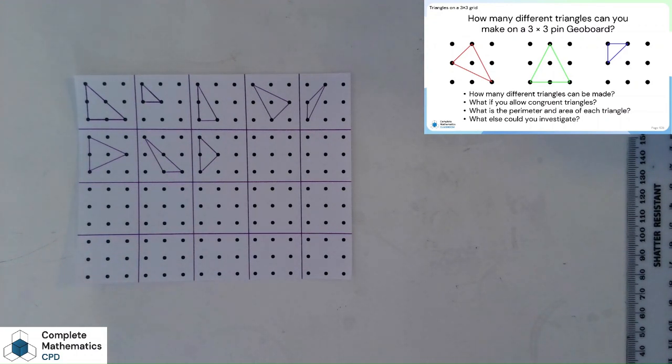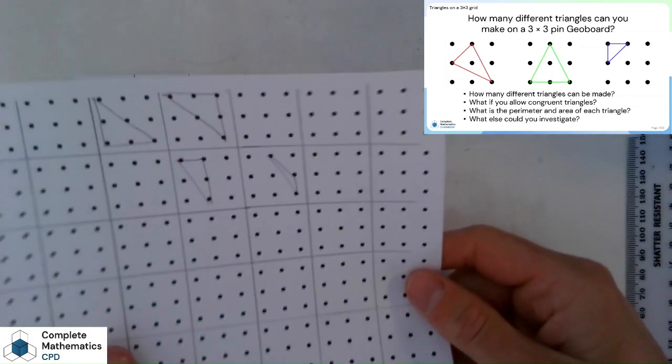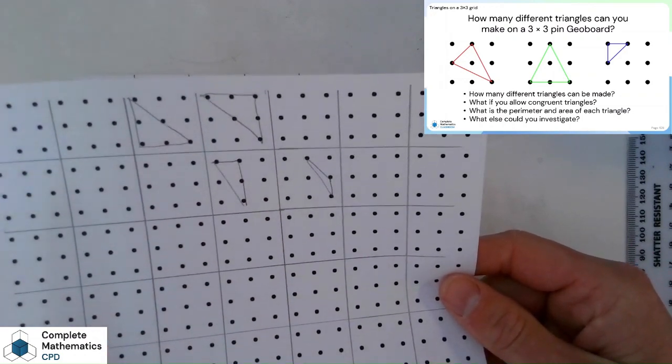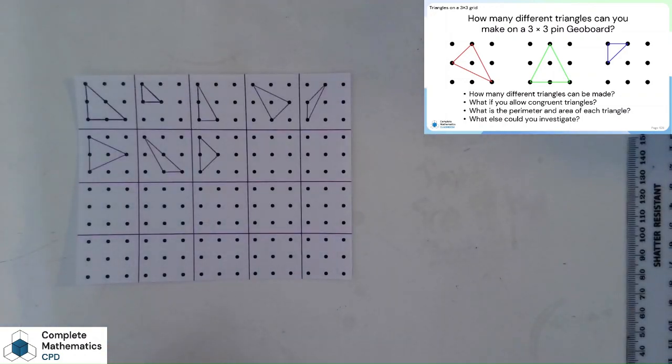One other nice prompt, which I'm going to leave you with, and I'm not going to give you the answer to this one, is what if you don't count congruent triangles? So, going back to, say, this one, what if you count this one and this one as a different triangle? Then how many different triangles are there now?